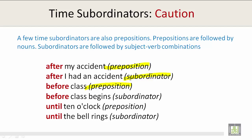'Before class' is a preposition because it is followed by a noun. 'Before class begins' is a subordinator because it is followed by a subject-verb combination. 'Until 10 o'clock' is a preposition because after 'until' is a noun. 'Until the bell rings' is a subordinator because it is followed by a subject-verb combination.